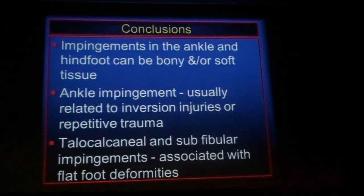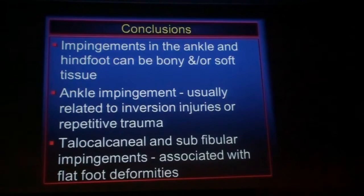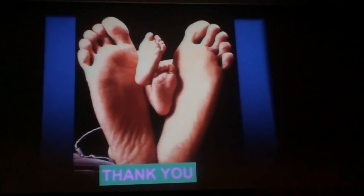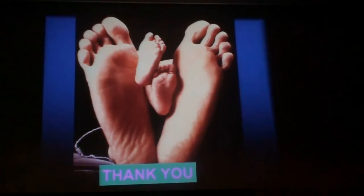In conclusion, impingement in the ankle can be either bony or soft tissue. Bony impingement can be picked up easily on radiographs, while MRI or ultrasound are more useful for visualizing the soft tissue abnormalities associated with it. A lot of times they occur together. Remember that when we dictate, we need to say this is consistent with impingement syndrome in the appropriate clinical setting, because we really don't know if these patients are symptomatic from these findings. Thank you very much — this concludes the MSK portion of the conference.